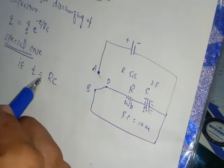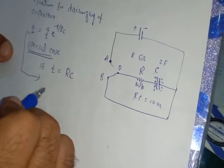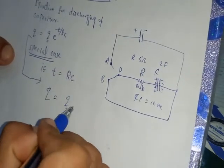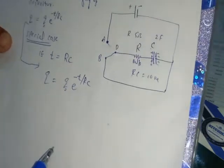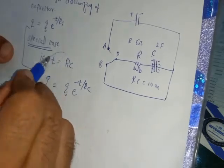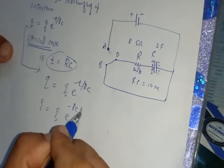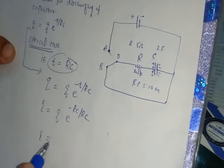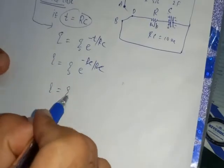Then this equation becomes Q equals Q naught E power minus T by RC. Now put the value of T as RC, so we get RC divided by RC. Similar terms will cancel out each other, so we get Q equals Q naught into 1 over E into 100 percent.